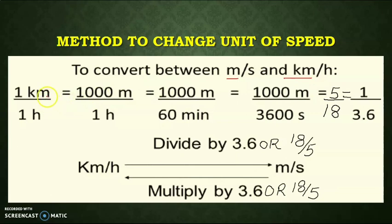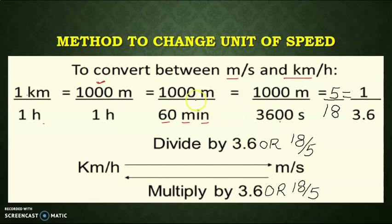If you want to convert, it will become one thousand meters upon three thousand six hundred seconds, which simplifies to five upon eighteen. So the conclusion is: to convert from kilometer per hour to meter per second, we divide by three point six, or equivalently multiply by five upon eighteen.